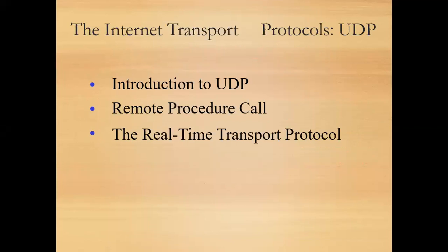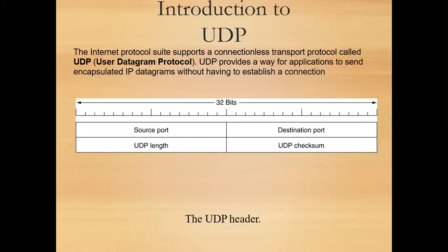UDP stands for User Datagram Protocol. We know that we have two kinds of protocols at the transport layer: TCP and UDP. TCP is a connection-oriented protocol and UDP is a connectionless protocol. This is the main difference between TCP and UDP. UDP is less reliable because it is connectionless. The internet protocol suite supports a connectionless transport protocol called UDP.